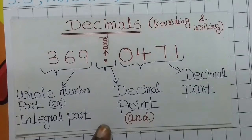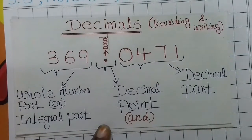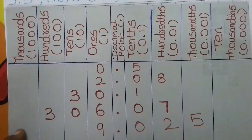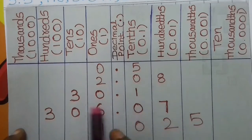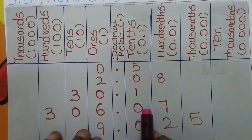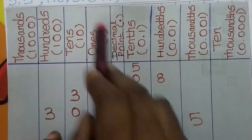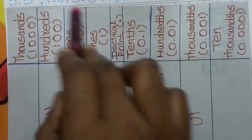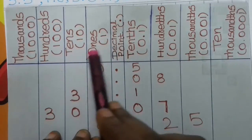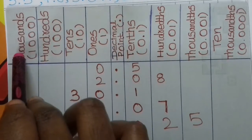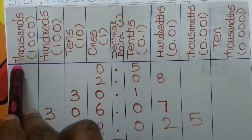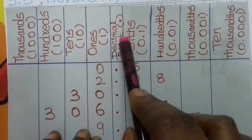First, we compare the whole number part. Each digit of a decimal number has a place value. To the left of the decimal point — the whole number side — we have ones, tens, hundreds, and thousands.